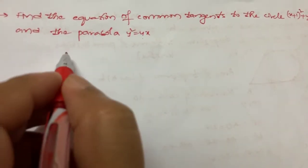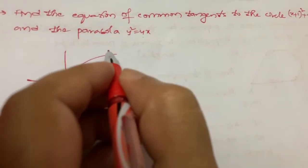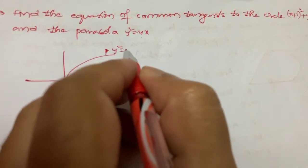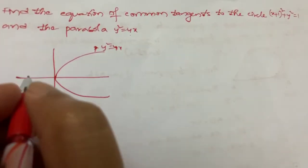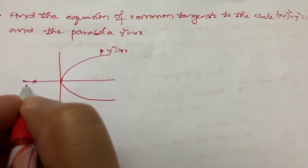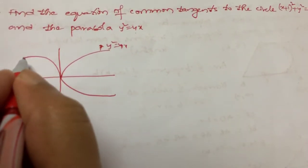So if you try to plot them in a graph, y² = 4x is like this, and (x+1)² + y² = 1. So at (-1, 0) is the center of the circle and you have to draw a circle.